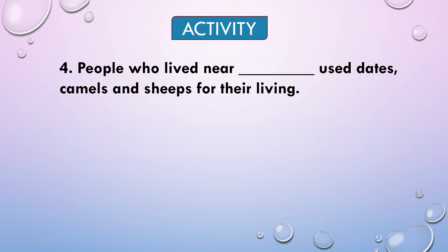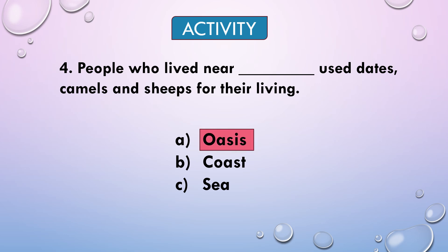People who lived near the blank used dates, camels, and sheep for their living. The options are oasis, coast, and sea. The answer is oasis. You are right!